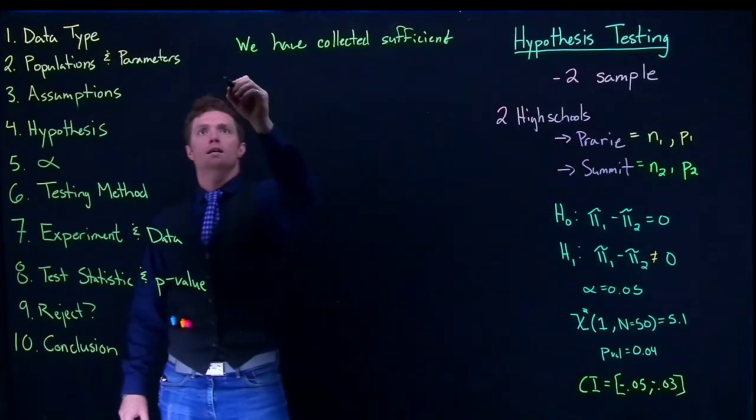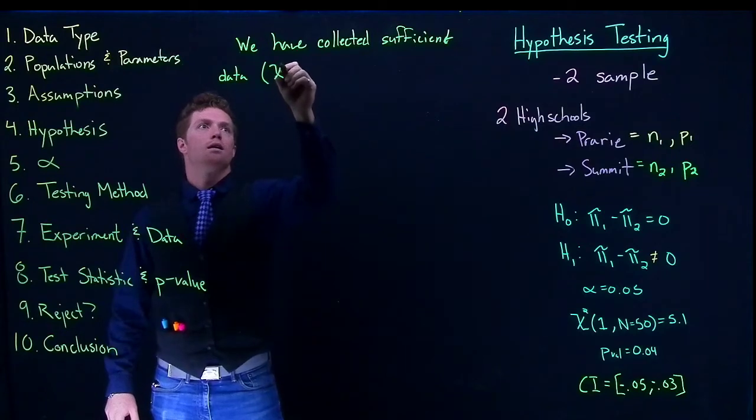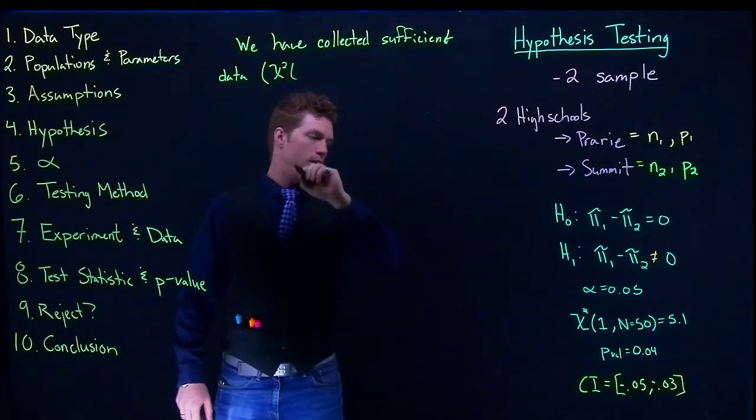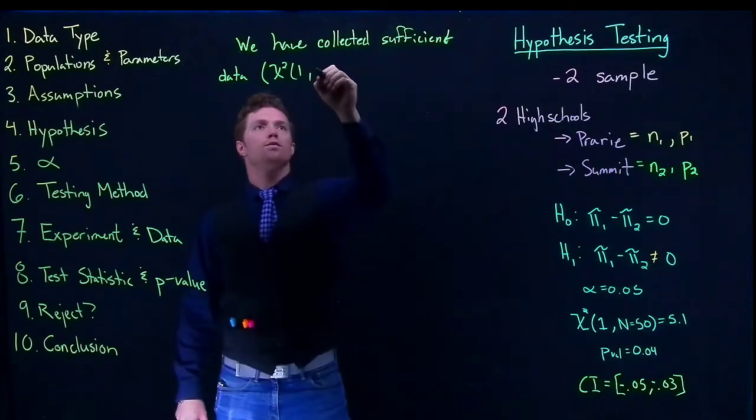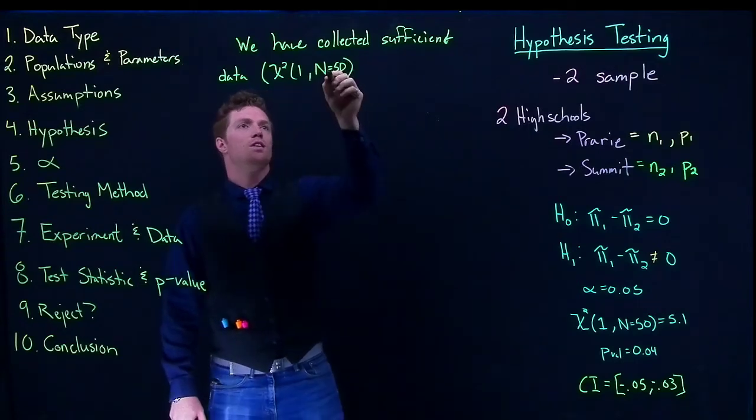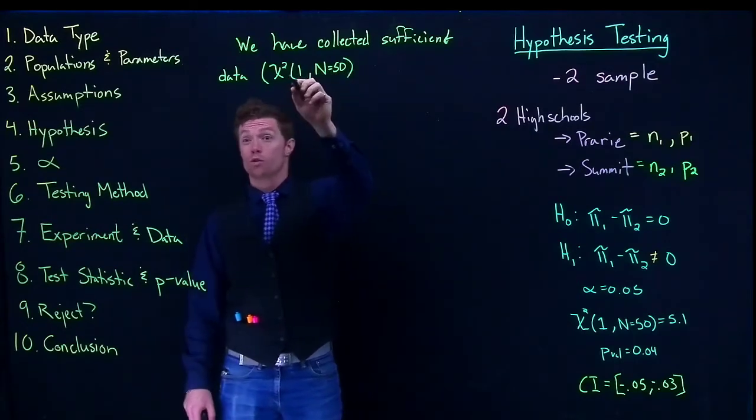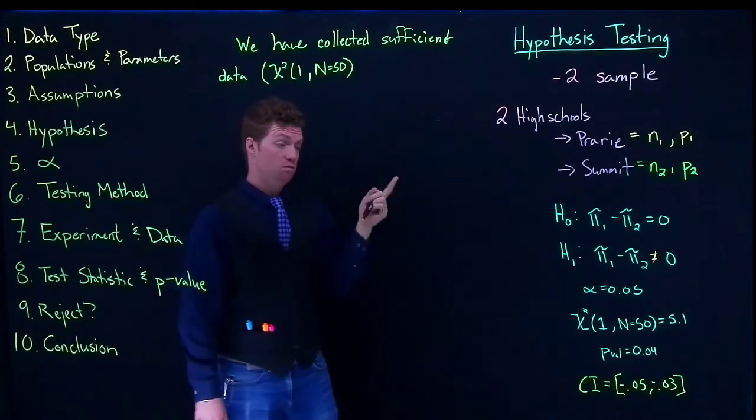And then I'm going to put in my chi-squared, and that is 1, n equals 50. So this is the sample size, this is the number of groups minus 1, so we had two groups minus 1, which is just 1.